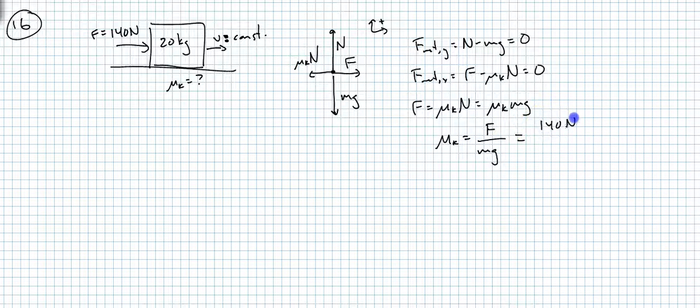That's 140 newtons divided by 20 kilograms times 10 newtons per kilogram. That's 0.7. Notice that there are no units on that. The units cancel, newtons over newtons.